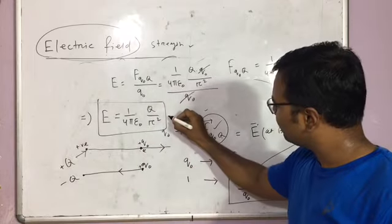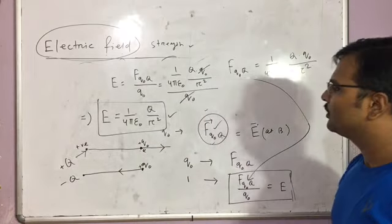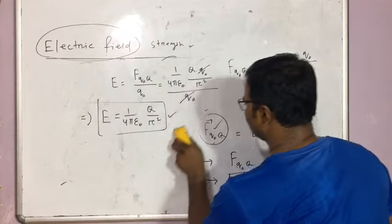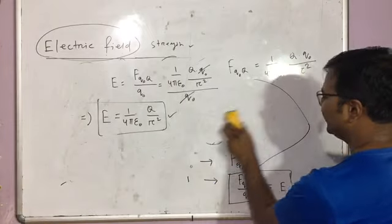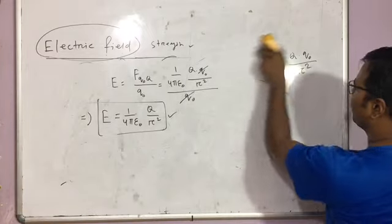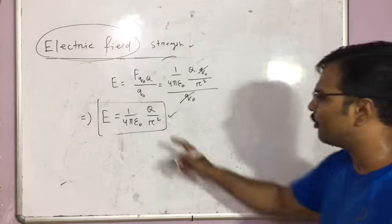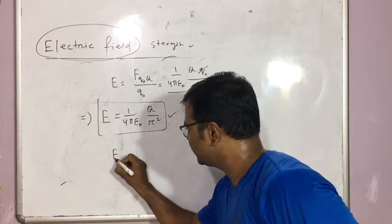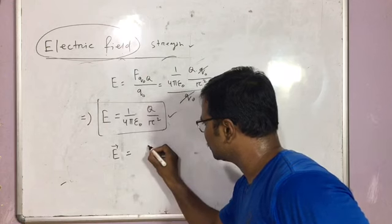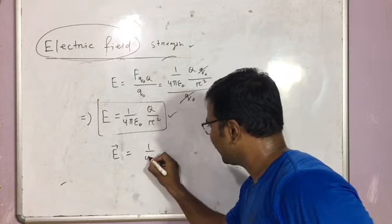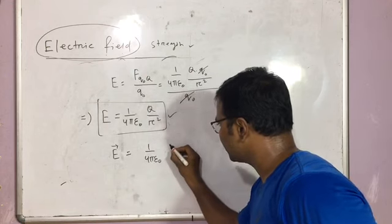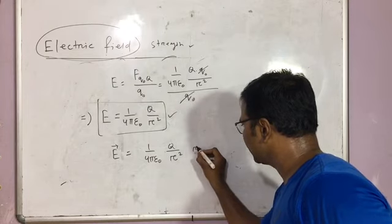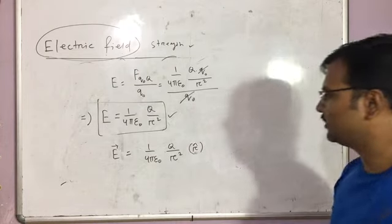This is the value of the electric field strength because of a point charge. In vector form we can write E vector is equal to 1 by 4 pi epsilon 0, q by r square, into r cap.